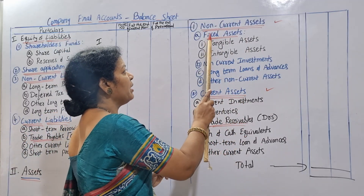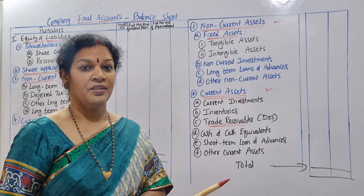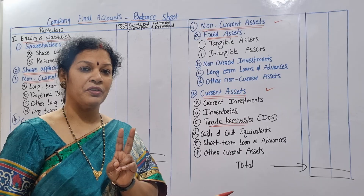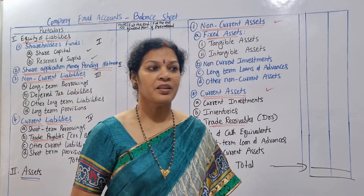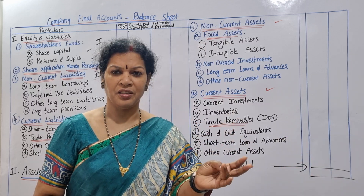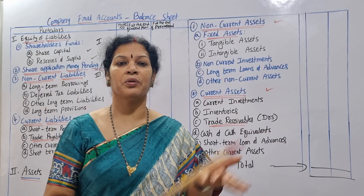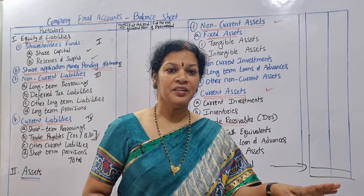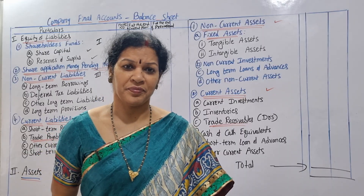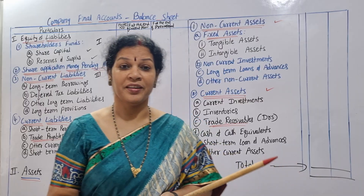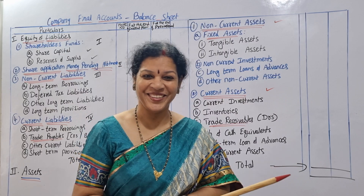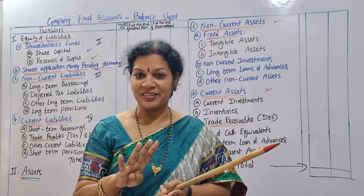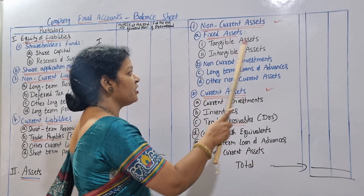Non-current assets have four parts. The first is fixed assets, which are divided into two parts: tangible assets and intangible assets. Tangible assets include building, machinery, furniture, land, and premises — these are physical assets. Intangible assets include goodwill, trademark, patents, and copyrights.